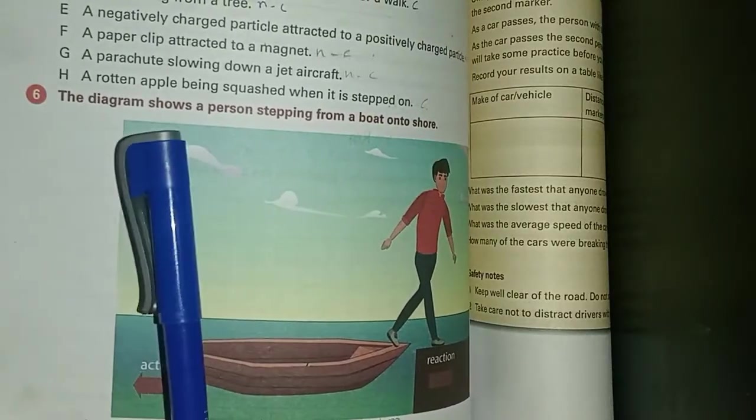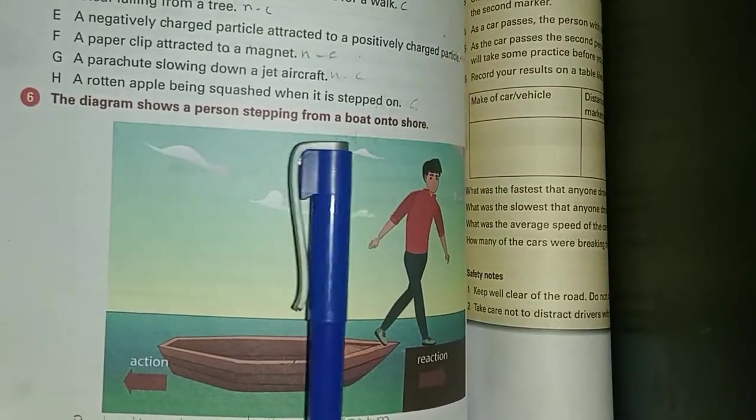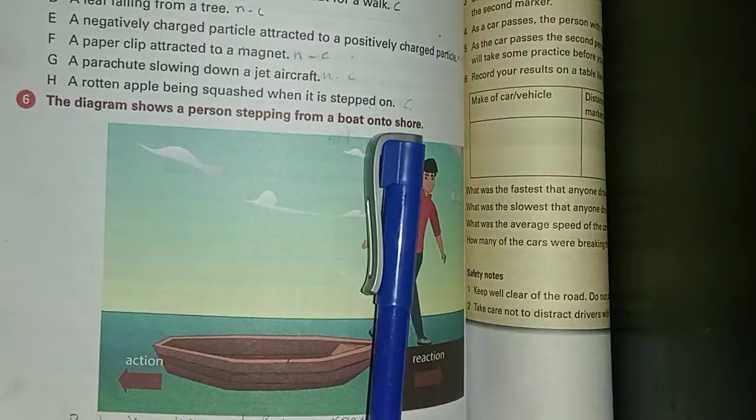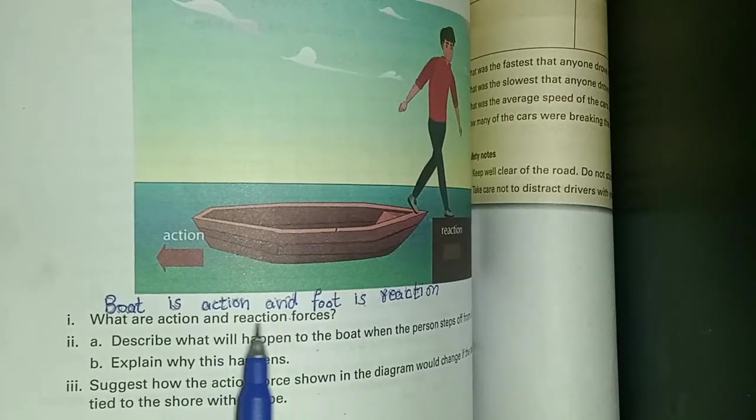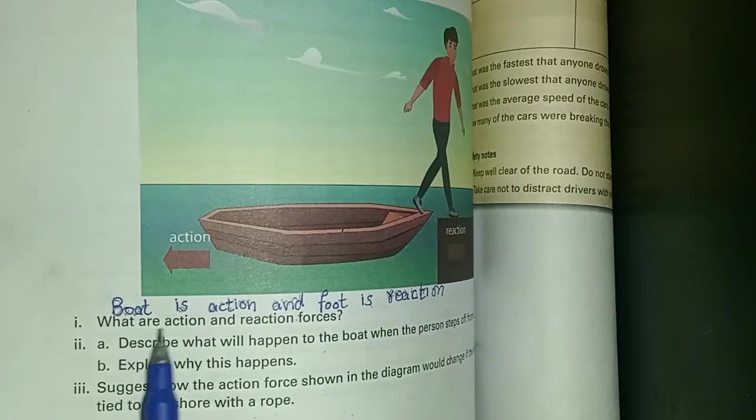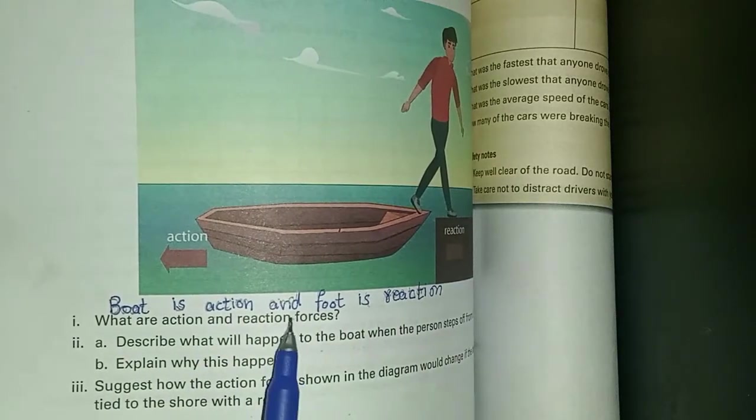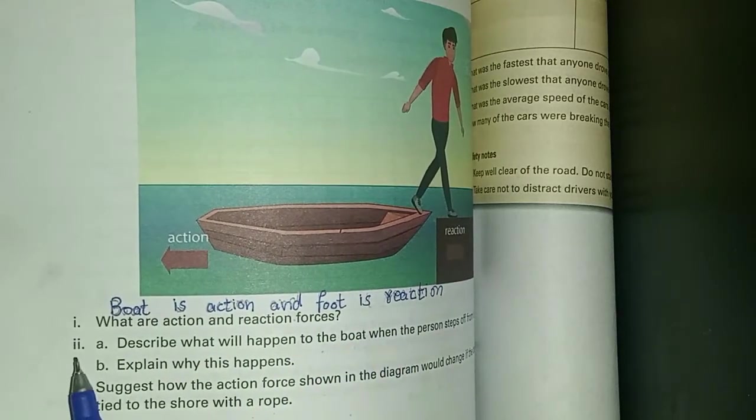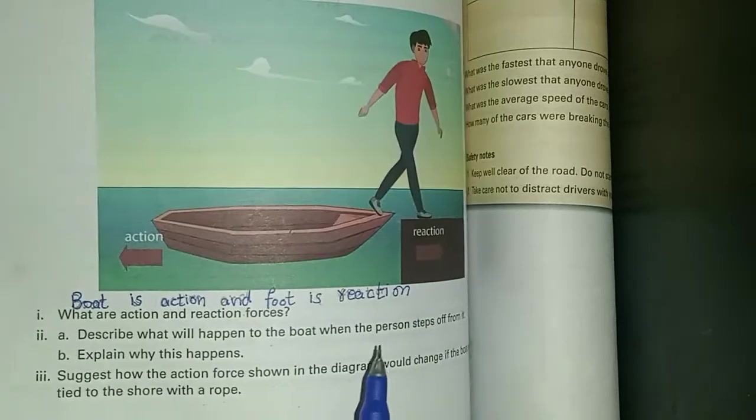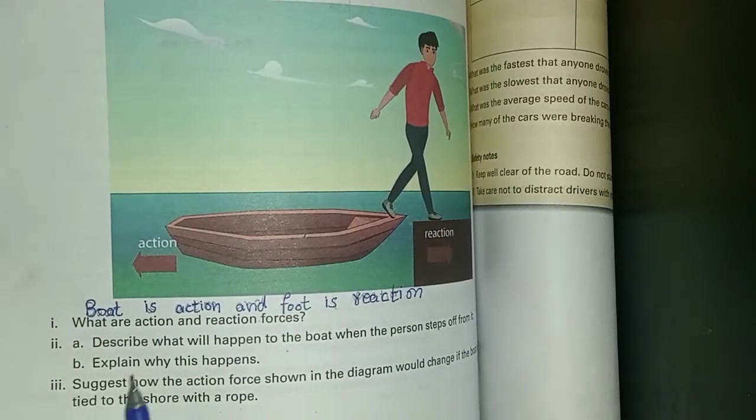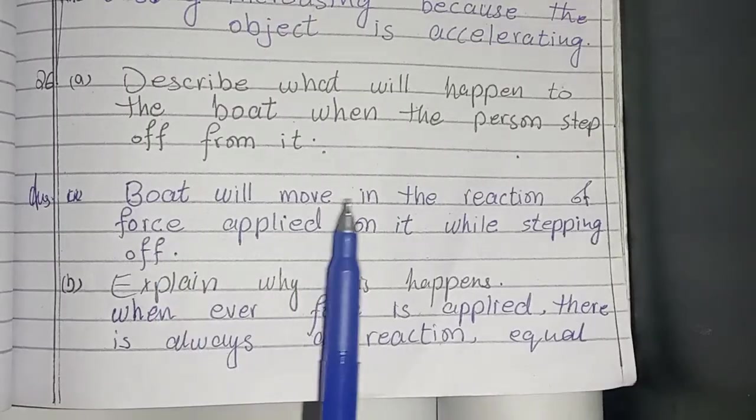The question: a diagram shows a person stepping from a boat onto shore. Look at this diagram. What are the action and reaction forces? In the answer, write: boat is action and foot is reaction. Second question part A: describe what will happen to the boat when the person steps off from it. Answer: boat will move in the direction of force applied on it while stepping off.